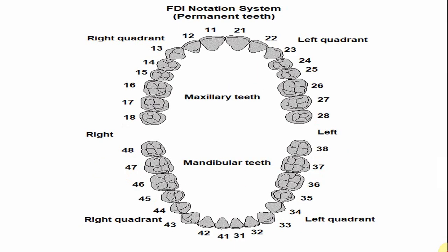In the FDI notation system, the number of the mandibular second molar for the left side is 37. The three indicates that it is the left mandibular quadrant, and the seven indicates the tooth number. For the right side, the number is 47 — the four indicates the right mandibular quadrant, and the seven again indicates the tooth number.